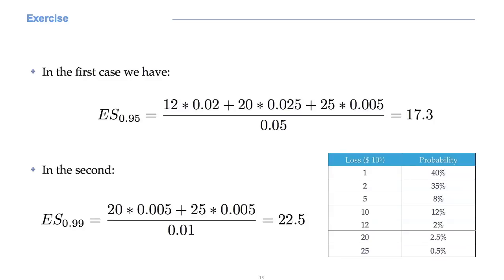To compute the expected shortfall, the trick is to sort the losses as usual. Then we start from the bottom, that is to say, from the largest losses, and we go backward, summing the corresponding probabilities, until we reach the 1 minus alpha level. If alpha is 95%, then 1 minus alpha is 5%. Look at the table. The 25 million loss has a chance of 0.5%. Is this equal to 5%? No.